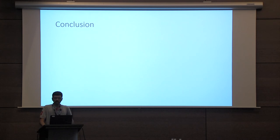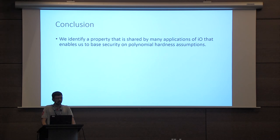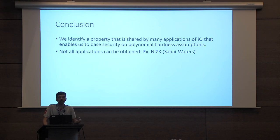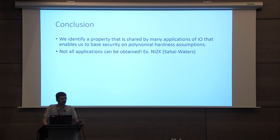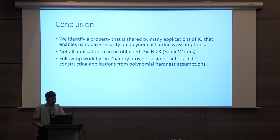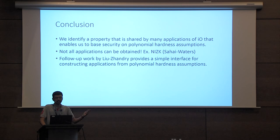To conclude, we identify a property shared by many applications of indistinguishability obfuscation that enables us to base security on polynomial hardness assumptions. However, we have not been able to obtain all applications of IO — even some that use the punctured programming approach — such as the non-interactive zero-knowledge protocol of Sahai-Waters and deniable encryption from the same paper. It would be a nice open problem to base deniable encryption on polynomially hard functional encryption. In a follow-up work by Liu and Zhandry, they provide a simple interface for constructing applications from polynomial hardness assumptions using the techniques developed in this work.